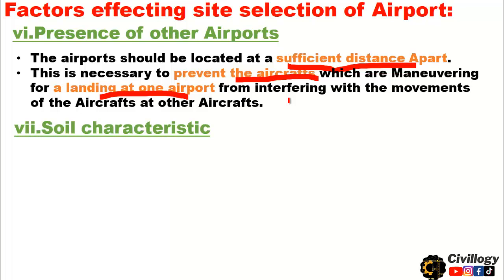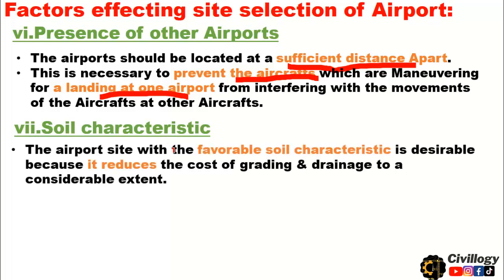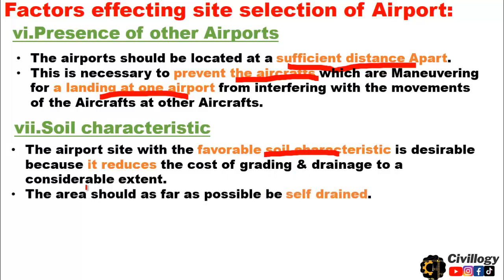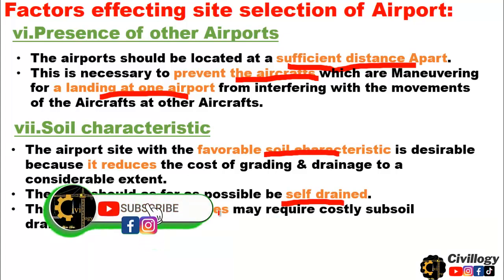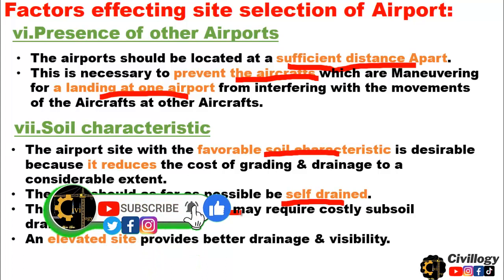The seventh point is soil characteristics. An airport site with favorable soil characteristics is desirable because it reduces the cost of grading and drainage to a considerable extent. The area should, as far as possible, be self-drained. Sites having high water tables may require costly sub-soil drainage. An elevated site provides better drainage and visibility.